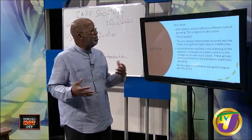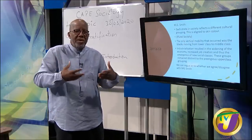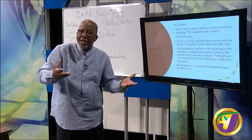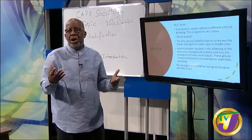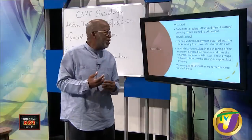Each strata in Jamaica reflects a different cultural grouping aligned to skin colour — we don't talk about it much, but it is reflected in practices like skin bleaching, where people think lighter skin gives them better opportunities for upward social mobility. The only vertical mobility that occurred was blacks moving from lower class to middle class, and they plateaued there. Getting into the upper class was by ascription — being born white automatically placed you in the upper class, even if poor. Industrialisation widened the economy, increased job creation, and led to the emergence of new classes.